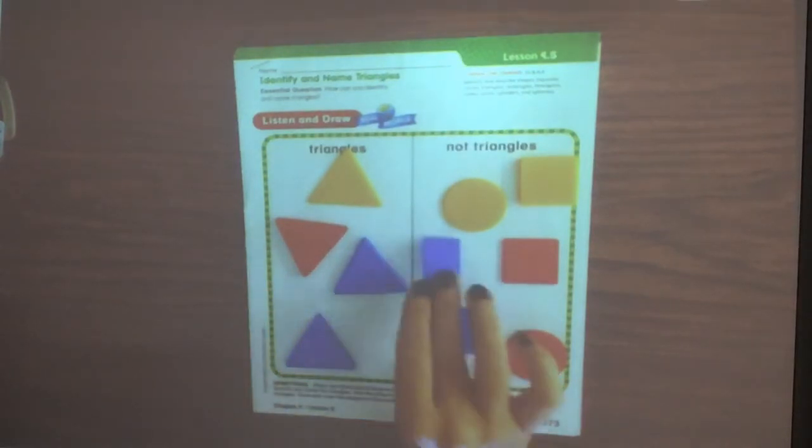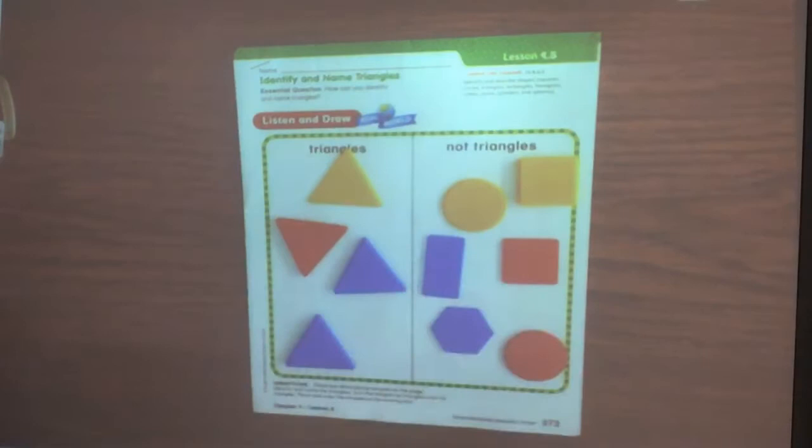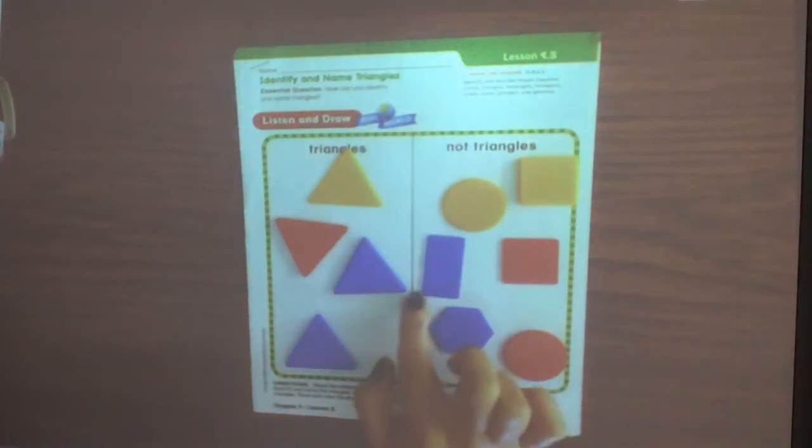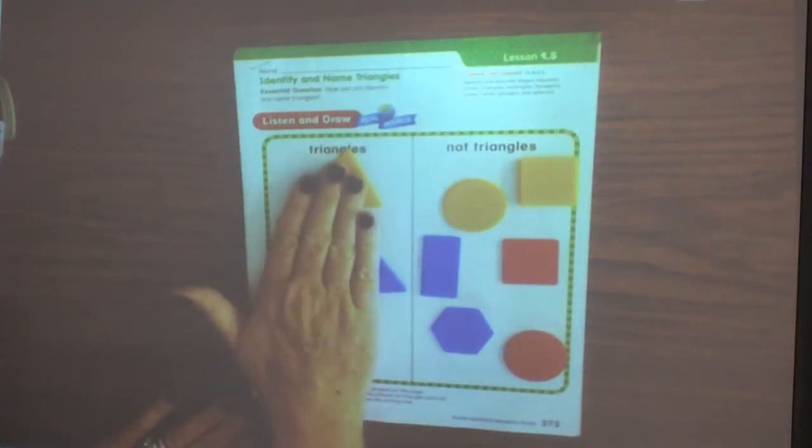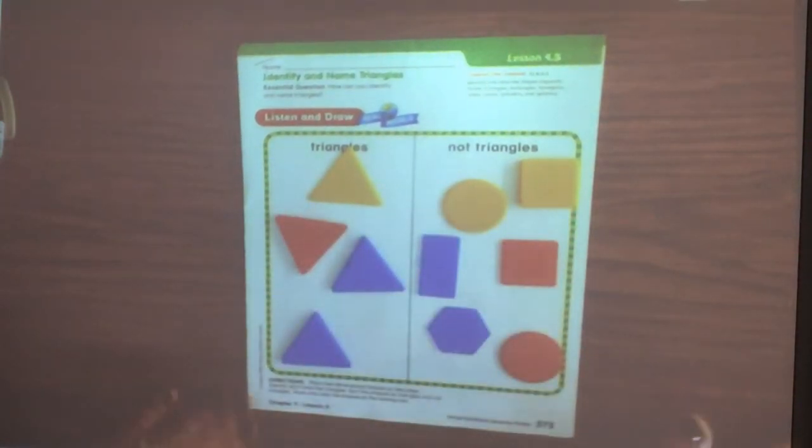What about this? That is our rectangle. It has four sides. Two of them are short, two of them are long. I can turn it this way or this way. It is still a rectangle. So these are triangles, these are not triangles.